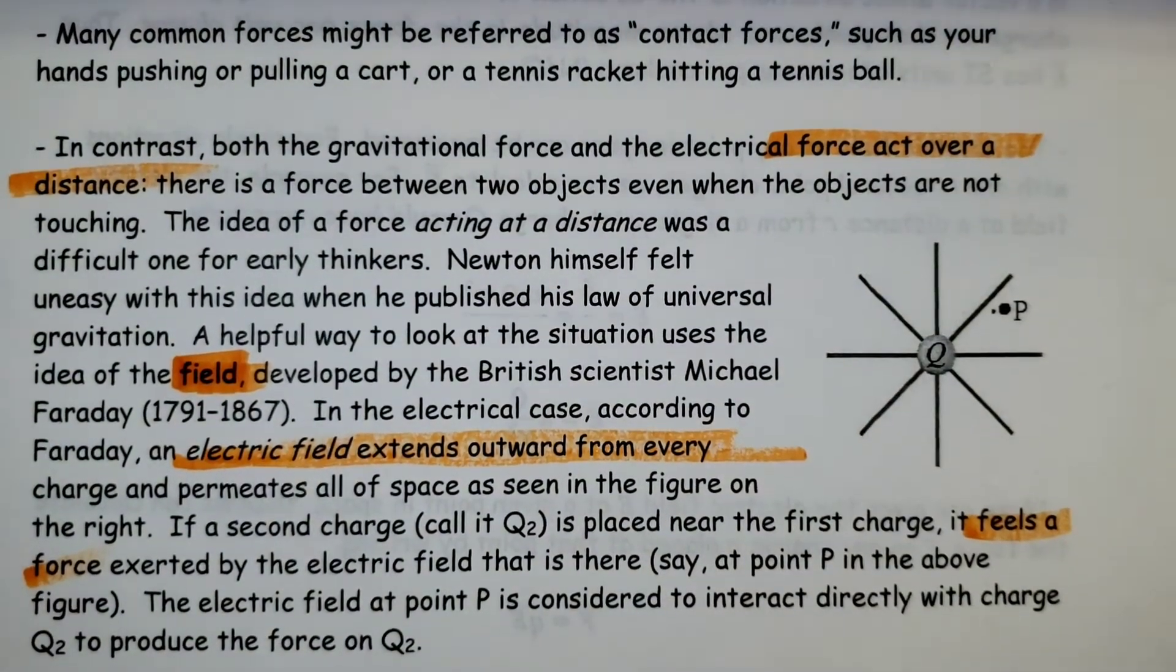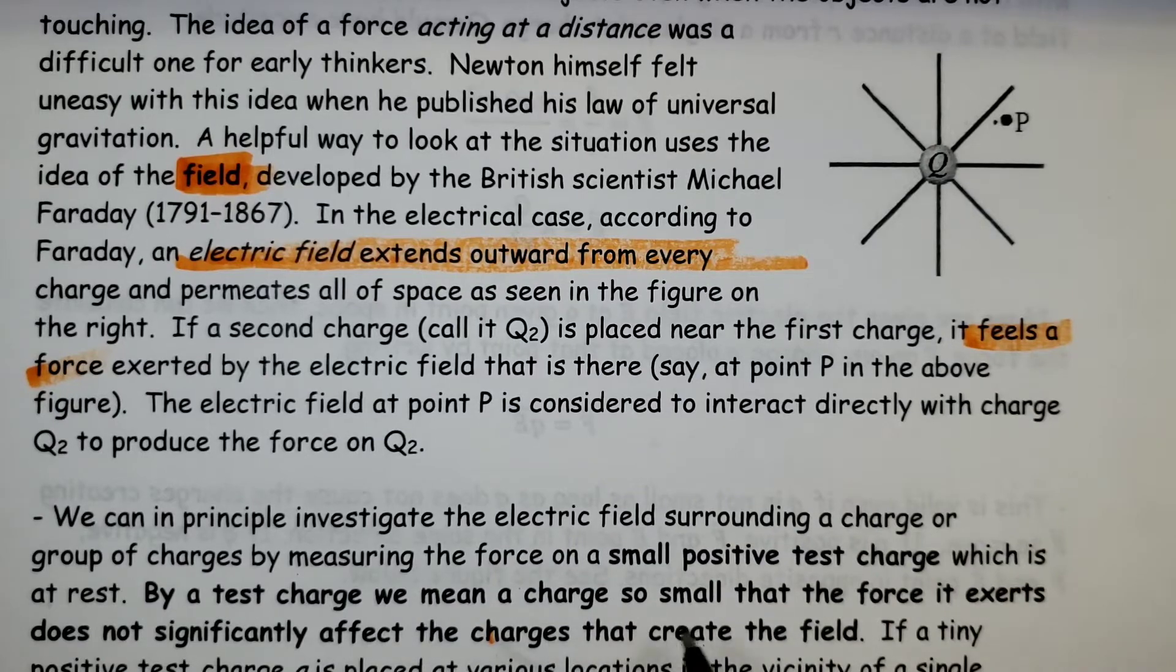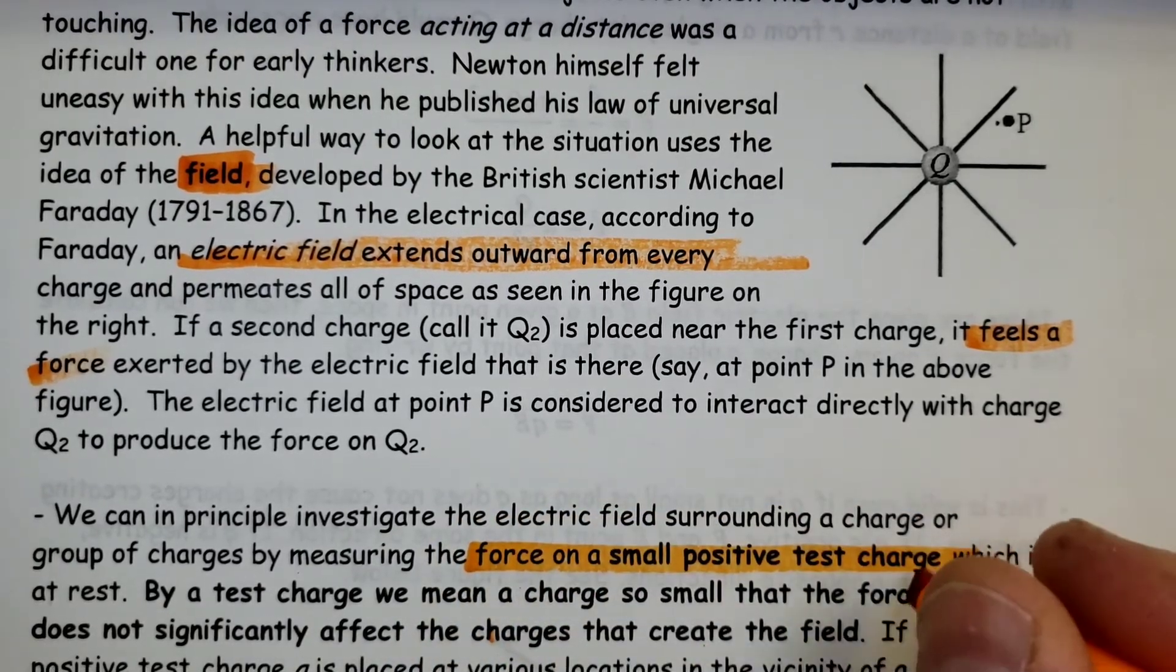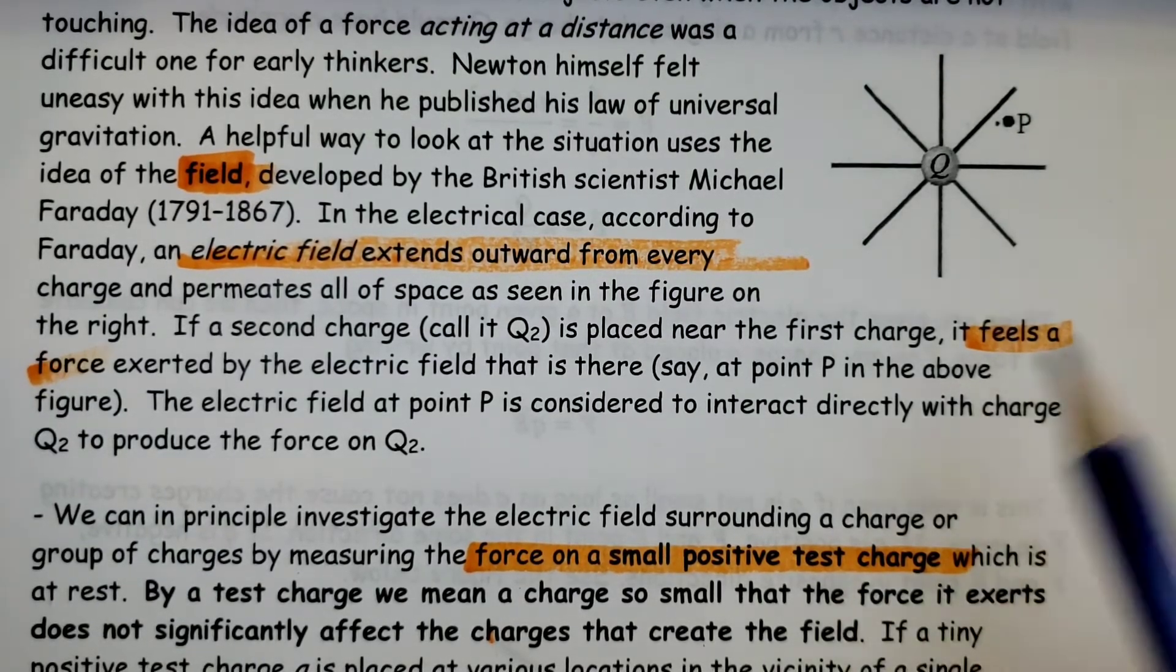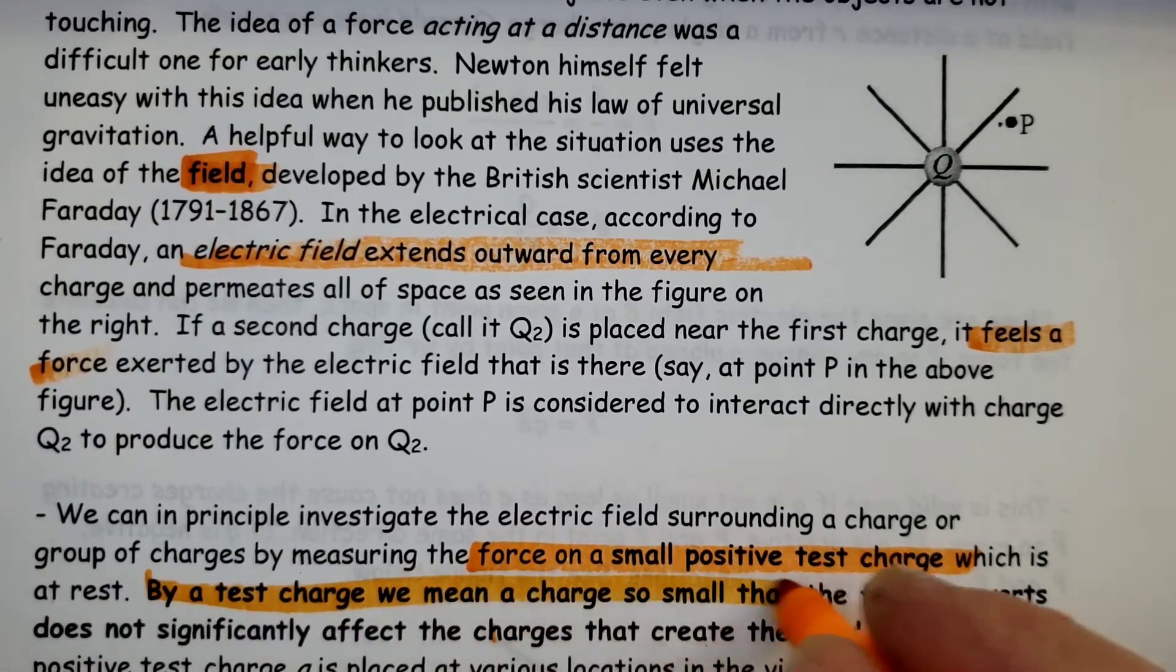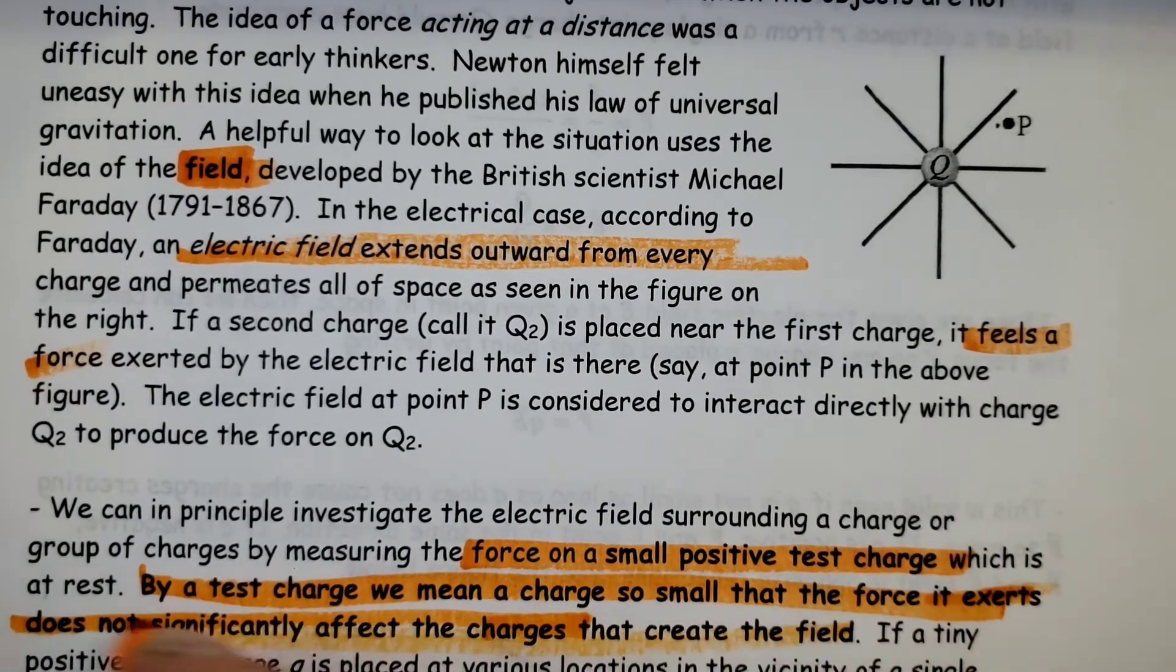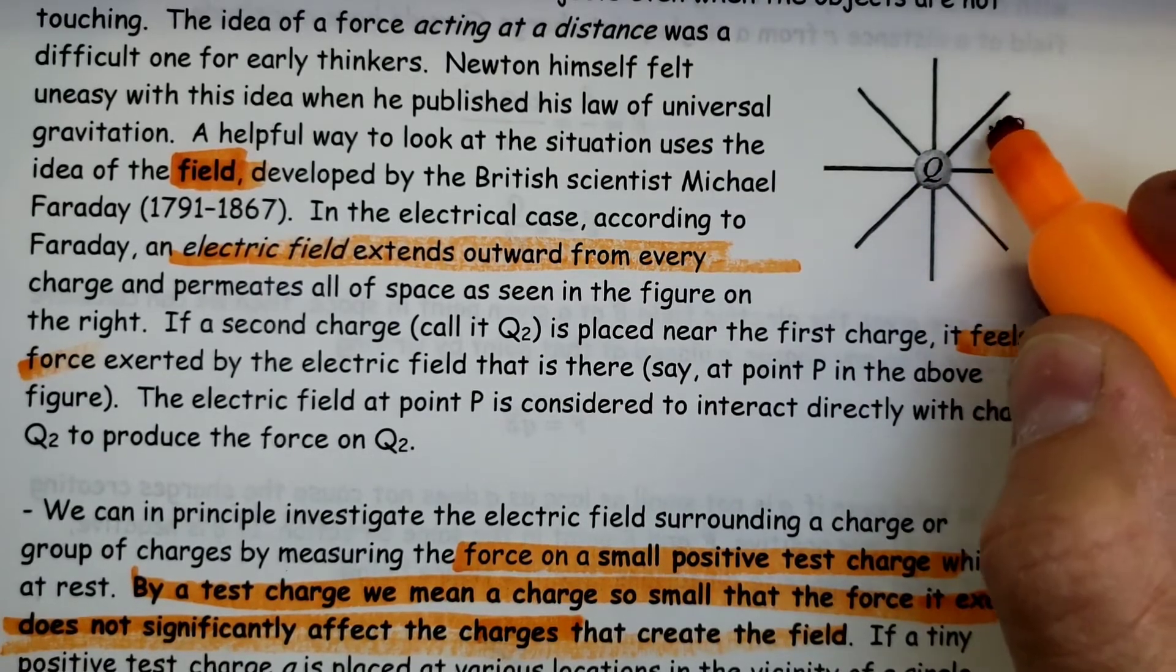The electric field at point P is considered to interact directly with the charge to produce the force on Q2. We can, in principle, investigate the electric fields surrounding a charge or group of charges by measuring the force on a small positive test charge. By a test charge, we mean a charge so small that the force it exerts does not significantly affect the charges that create the field. So it's not going to manipulate this field itself.